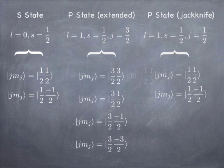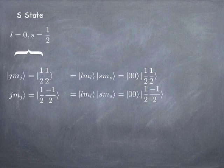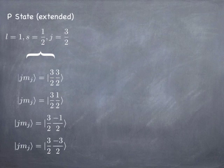For the S states, L=0 so M_L=0. If M_J is +1/2 then M_S must be +1/2, and if M_J is -1/2 then M_S must be -1/2 — quite simple. In the extended configuration we need to express the state |3/2, 3/2⟩ in terms of L and S. The only way to get M_J=3/2 is if M_L=+1 and M_S=+1/2, so they add up to 3/2. That's the top of the ladder.